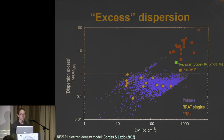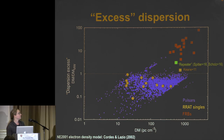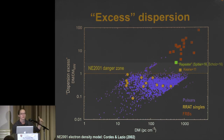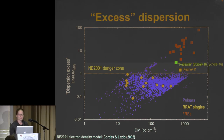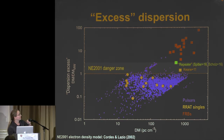I've also plotted RRATs — rotating radio transients, a different type of neutron star — which appear to be within the galaxy. A few pulsars lie just above a ratio of one, not because they're extragalactic but because the NE2001 electron density model for our galaxy isn't quite perfect — I call this the NE2001 danger zone. The repeater sits right at the edge of this zone and is believed to be extragalactic.